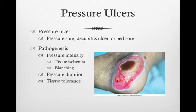A pressure ulcer is a localized injury to the skin and underlying tissue. It's usually over a bony prominence and results from pressure in combination with shear and friction. If pressure is applied over a capillary and extends for a long period of time, ischemia will occur to the tissue. If left untreated, tissue death occurs.